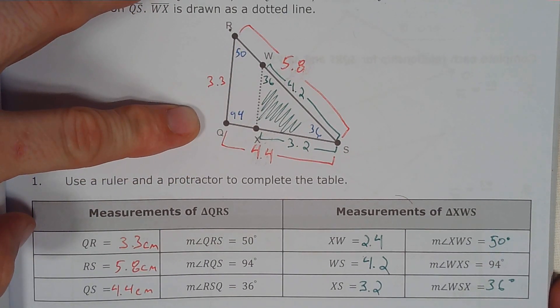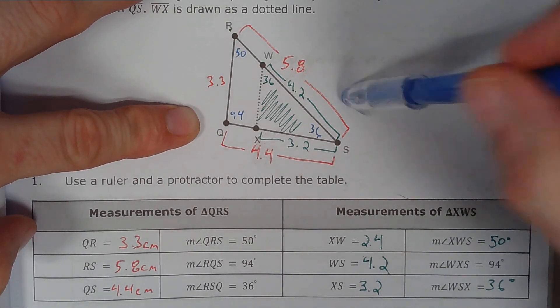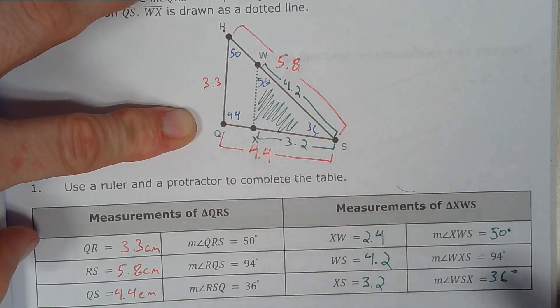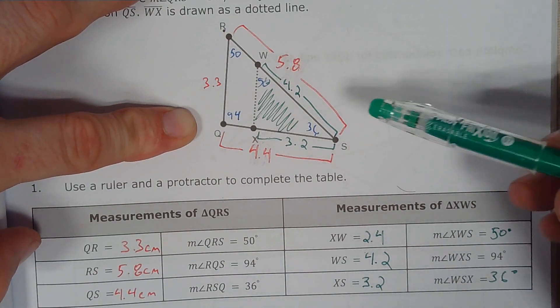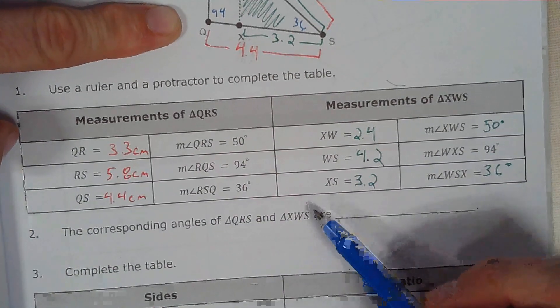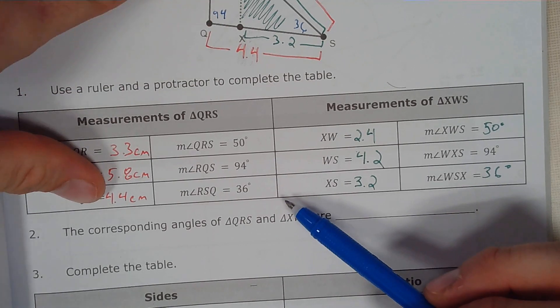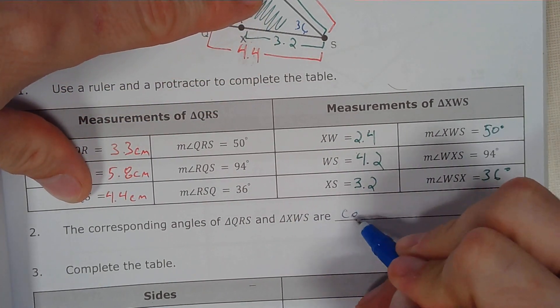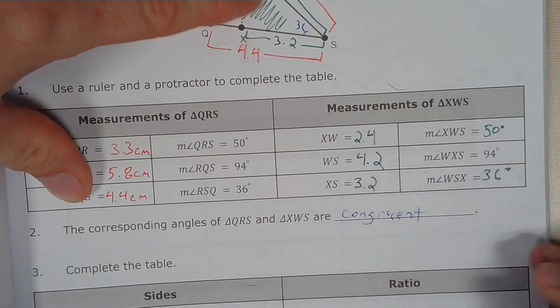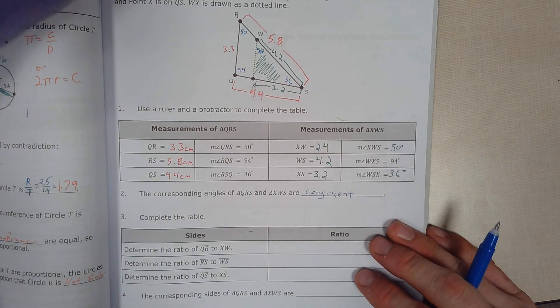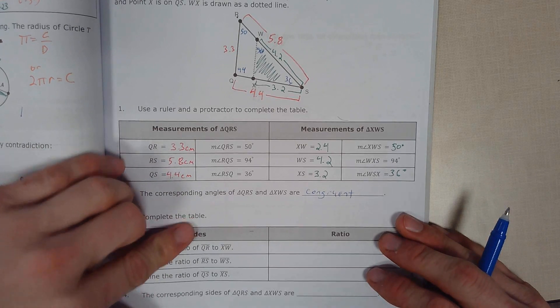You can see that the green triangle's inside the red triangle there, and they both share this angle. This should be 50 degrees here and 50 degrees. All these angles here that make up QRS and XWS are congruent. The purpose of this one here is to show you the ratios are all the same.